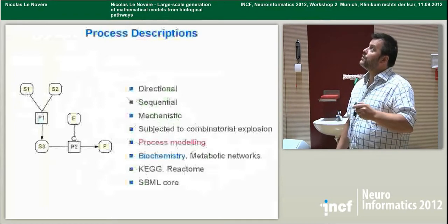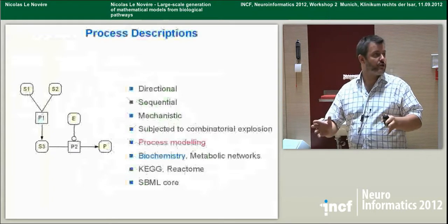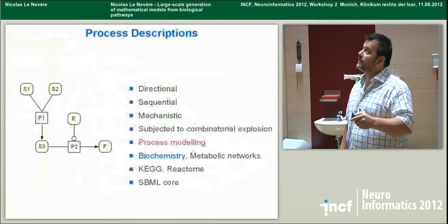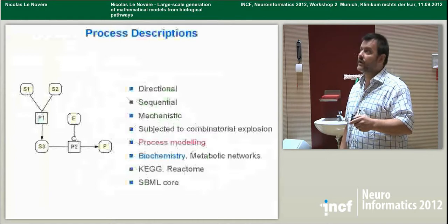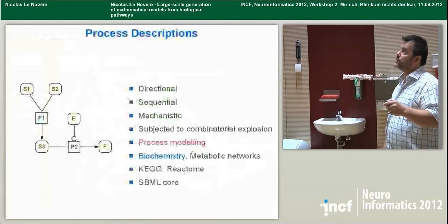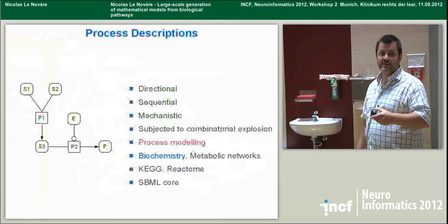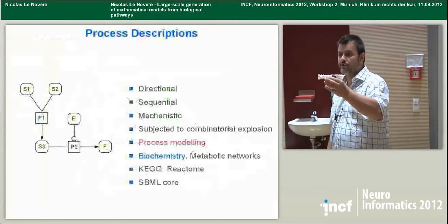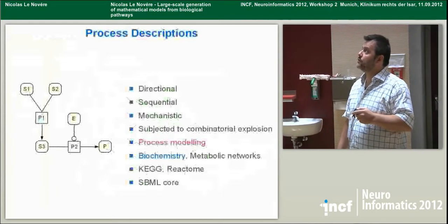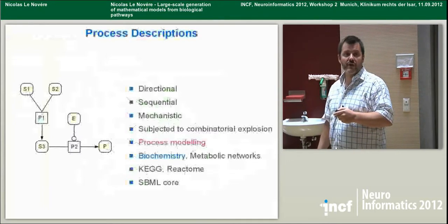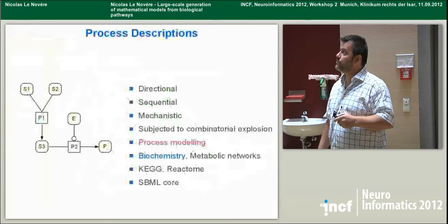The first representation is a process description — the classical biochemical representation used for the last 70 years — where you have two pools of molecular species transformed into other pools through processes, and those processes can be regulated by yet other pools. It's a bipartite graph where the species node never connects directly to another species node. These representations are directional, sequential, and mechanistic — you know exactly what's happening. But they are subject to combinatorial explosions. They are used heavily in process modeling for biochemistry, and KEGG metabolic pathways and Reactome are in process description, which we encode in SBML core.